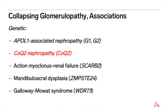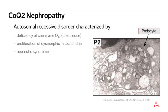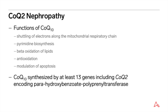The pathogenesis of collapsing glomerulopathy has also been linked to mitochondrial dysfunction. CoQ2 nephropathy is an autosomal recessive disorder characterized by a deficiency of CoQ10, otherwise known as ubiquinone. The deficiency results in proliferation and accumulation of dysmorphic mitochondria, as shown in the figure, which depicts a podocyte containing numerous and large mitochondria with disorganized cristae. The oxidative stress engendered by the CoQ10 deficiency causes disruption of podocyte function, which in turn alters the integrity of the glomerular filtration barrier and results in nephrotic syndrome. A role for apoptosis has also been implicated as a possible cause of podocyte injury in CoQ10 deficiencies. CoQ10 has multiple functions, including shuttling of electrons along the mitochondrial respiratory chain, pyrimidine biosynthesis, beta-oxidation of lipids, anti-oxidation, and modulation of apoptosis.